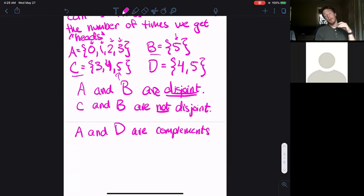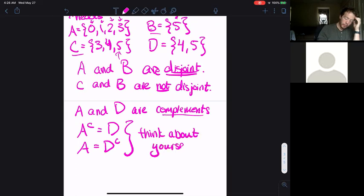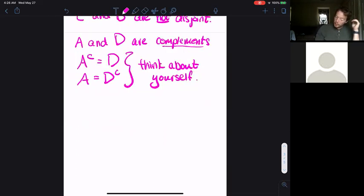A and D are complements. If we flip a fair coin five times, all of the options are zero, one, two, three, four, or five. Every single one of those events shows up in either A or D and there's no overlap. A contains zero, one, two, and three. D contains four and five. Together they have the whole sample space, so we call these complements of each other. You can also say that the complement of A is equal to D, or A equals D complement.